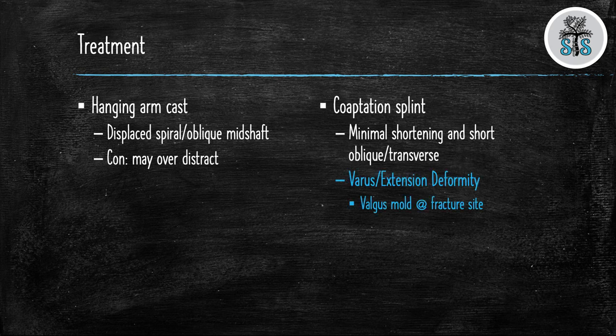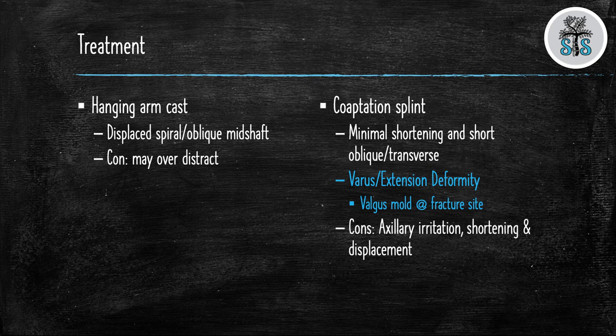Next is the cooptation splint. This splint will be the workhorse splint used for these injuries. They are best for fractures that are minimally short or fractures that are short oblique or transverse in orientation. The fractures have a high tendency of falling into varus and extension so you must mold them into valgus.